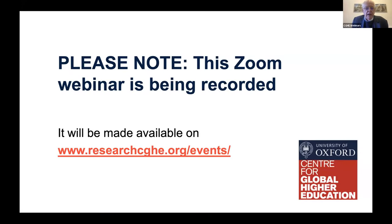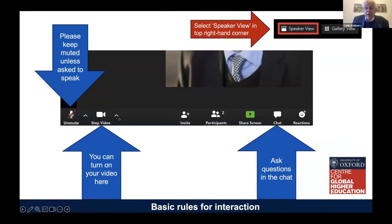The webinar is being recorded and will appear on our CG website and through that, our YouTube channel in the next couple of days. During the webinar, we advise you to stay muted because extraneous noise can intervene. You don't need to turn your camera on either, but we want you to turn both your sound and camera on when you enter the Q&A discussion. We advise you to use speaker view in the top right-hand corner with the big red arrow because that enables you to see what's going on during the webinar more clearly.